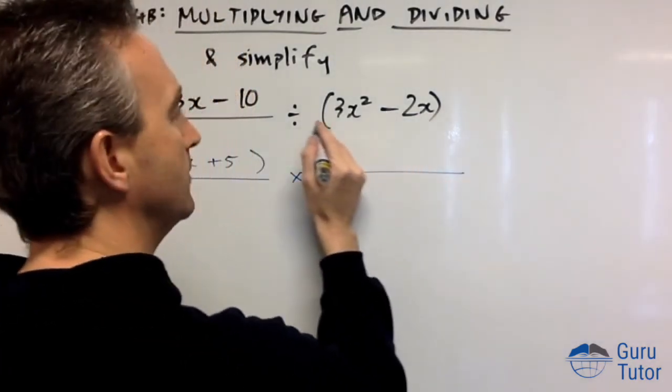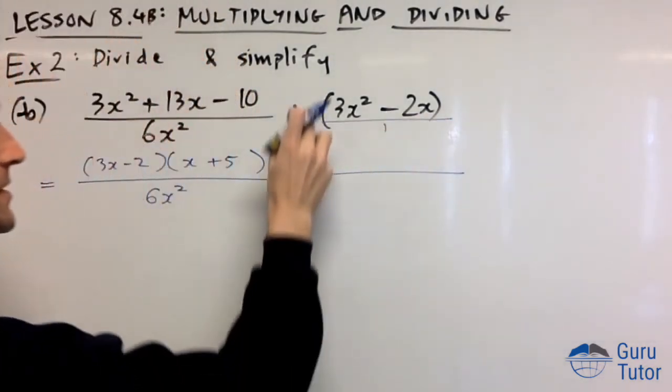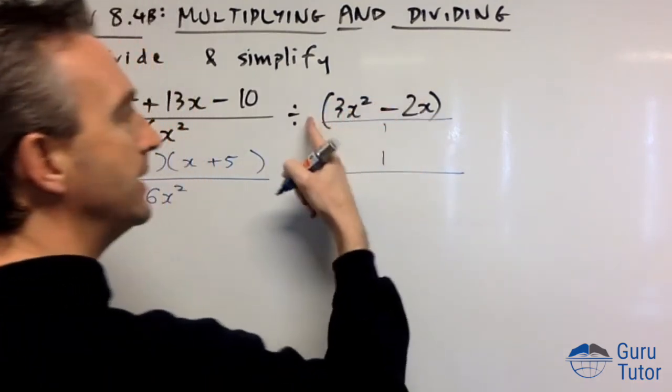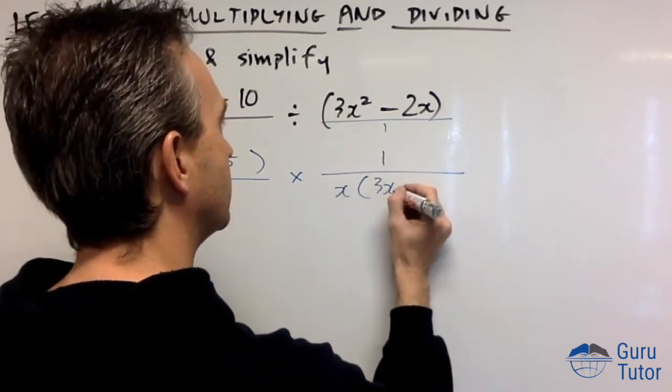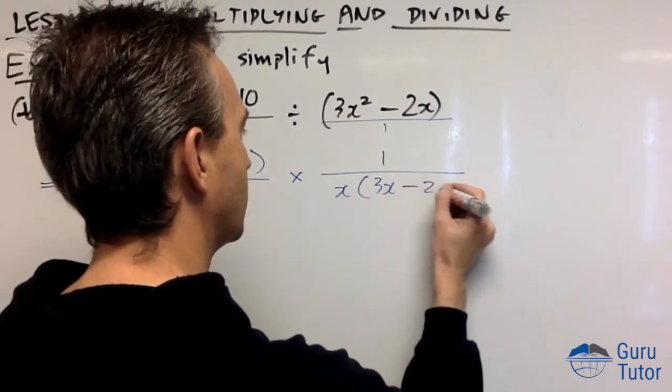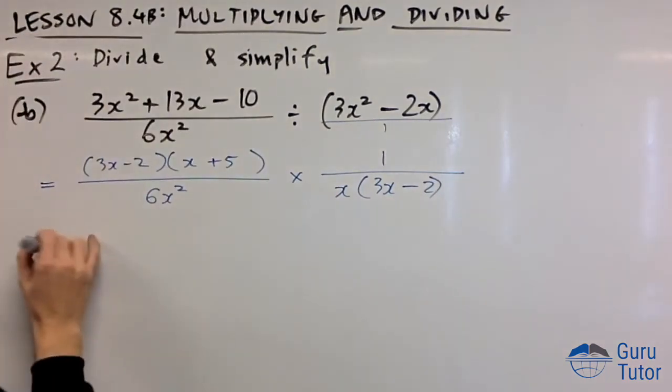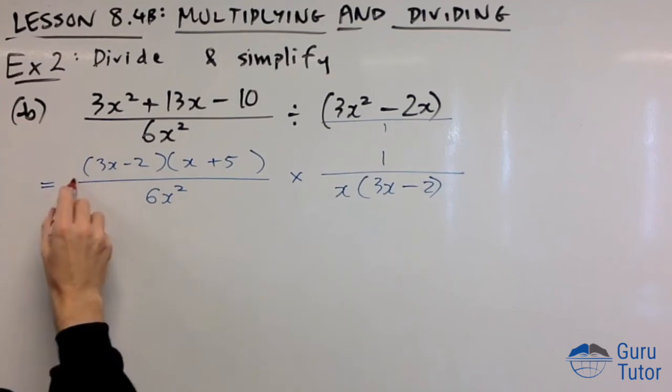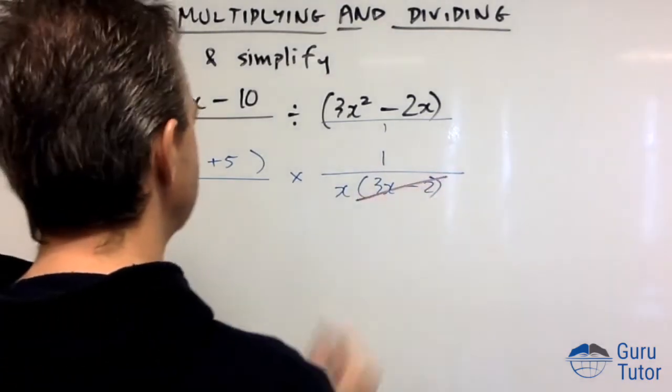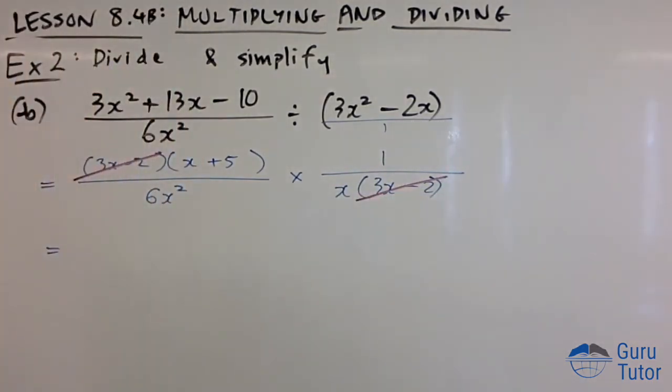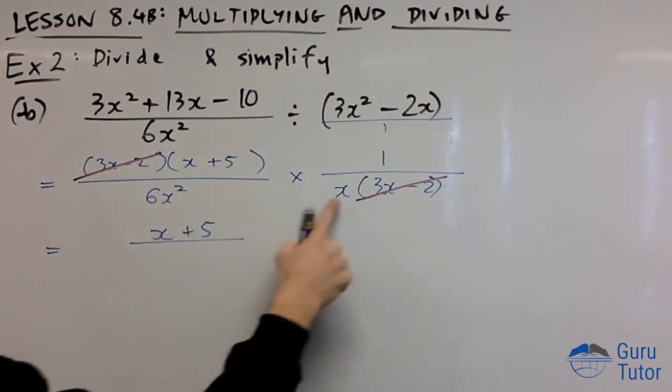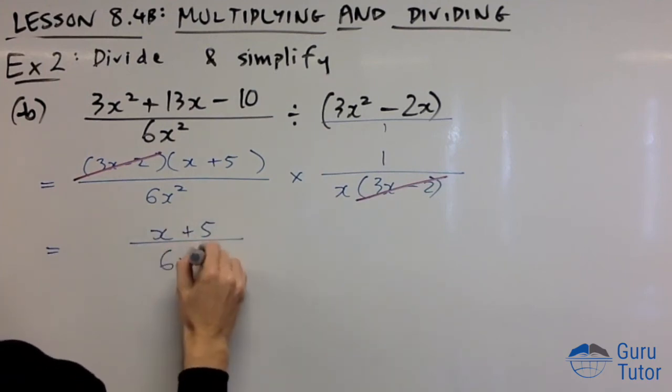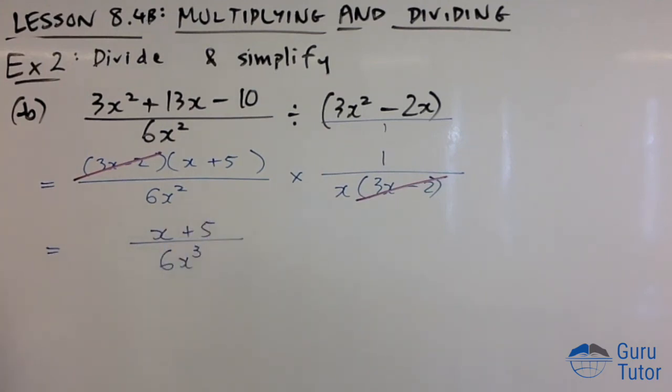Division becomes multiplication, so we flip: it's one over x(3x-2). Let's do some canceling. (3x-2) cancels with (3x-2). That I believe is it. (x+5) on top, on the bottom 6x² times x is 6x³. Stop. That is it.